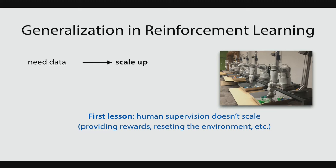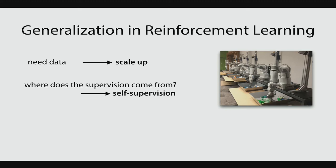The first lesson was that human supervision doesn't scale. In prior work, we had a human resetting the environment and specifying the reward function — that ultimately came from human engineering or a human providing supervision. If you want to learn on a collection of 10 different robots, we don't want 10 humans, and if we scale to even more robots, we don't want a human for every robot providing supervision. That defeats the point of having the robot there in the first place. So we're trying a self-supervised approach — seeing what can the robots do and how can they learn completely on their own through their own interactions.